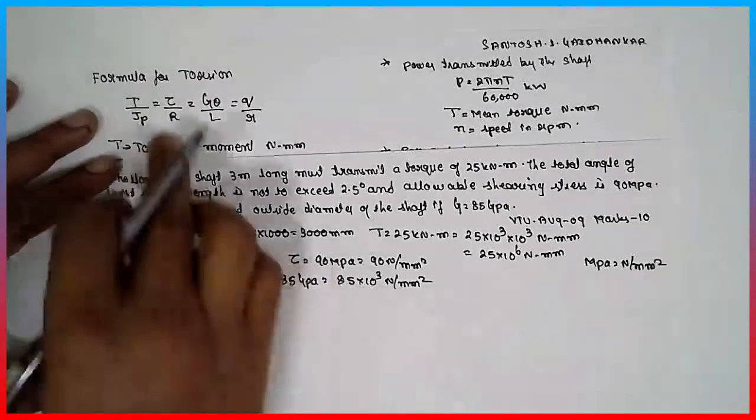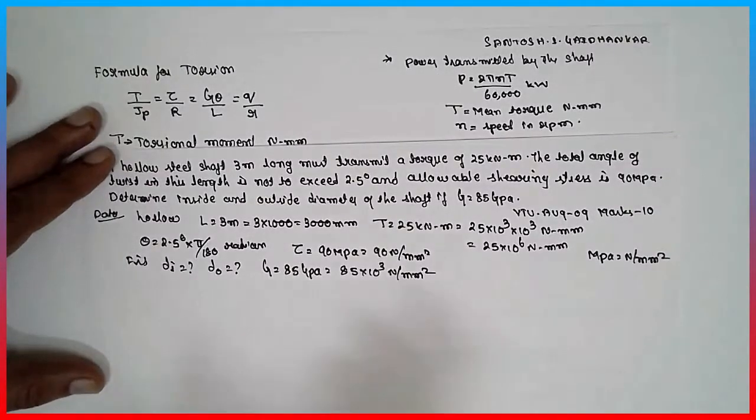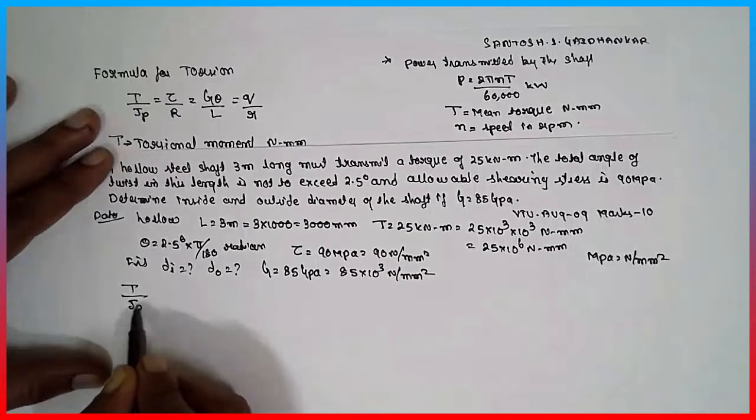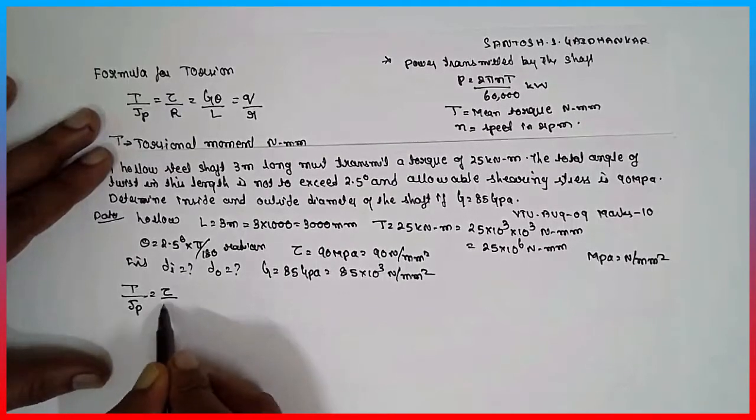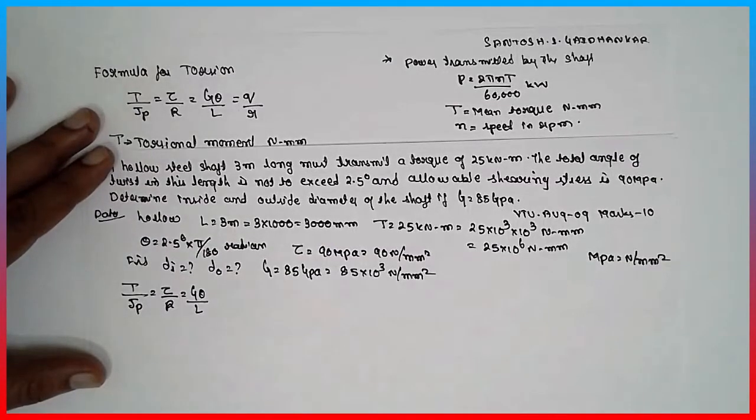Now this is the formula I am going to use in order to solve the problem. I will write the formula: T divided by Jp, polar moment of inertia, tau divided by R, G theta divided by L.